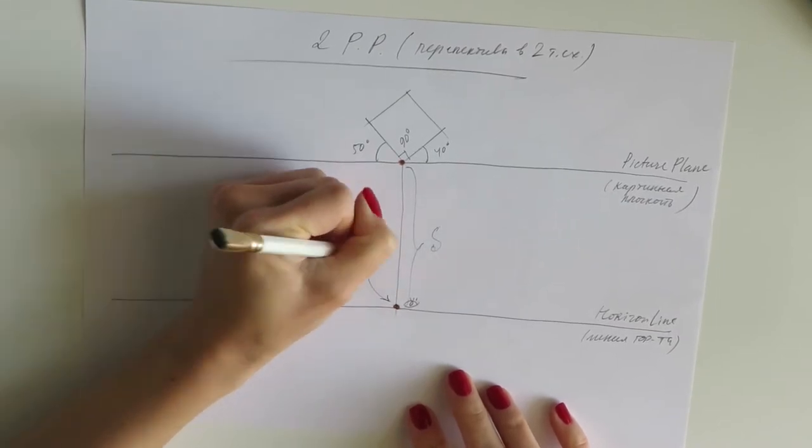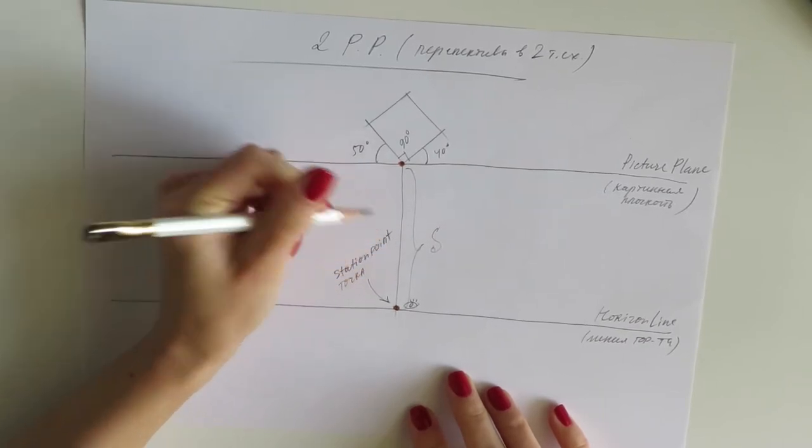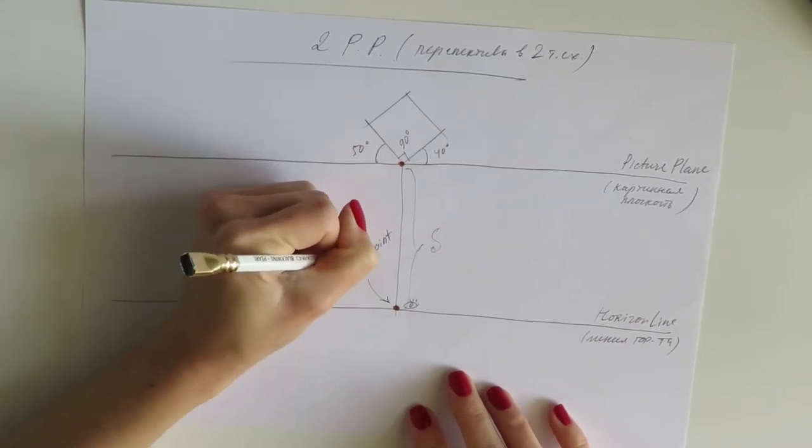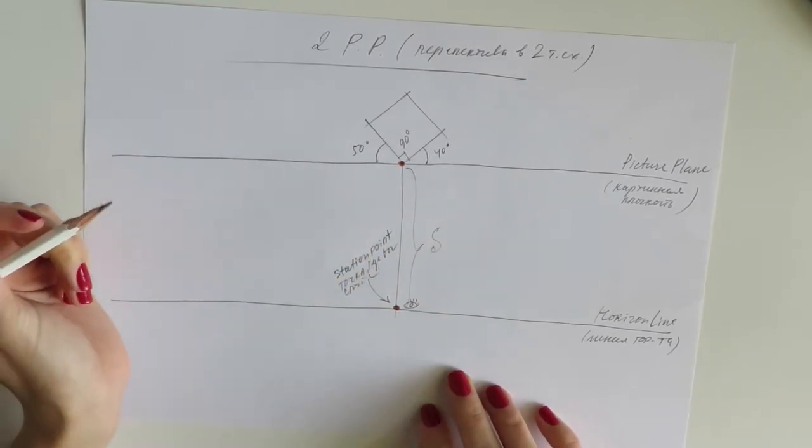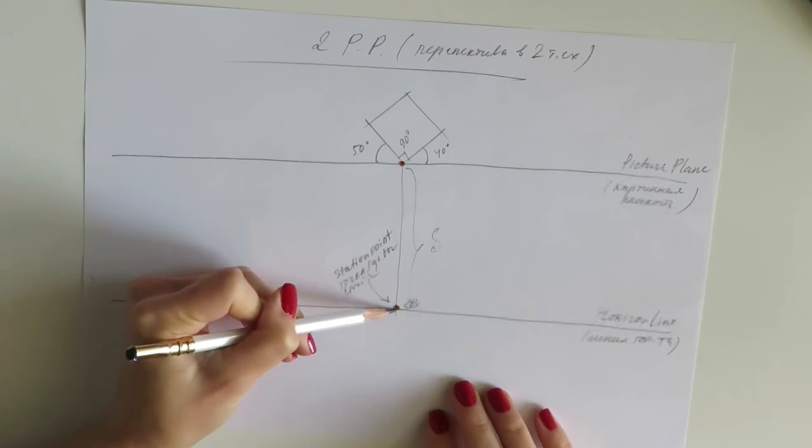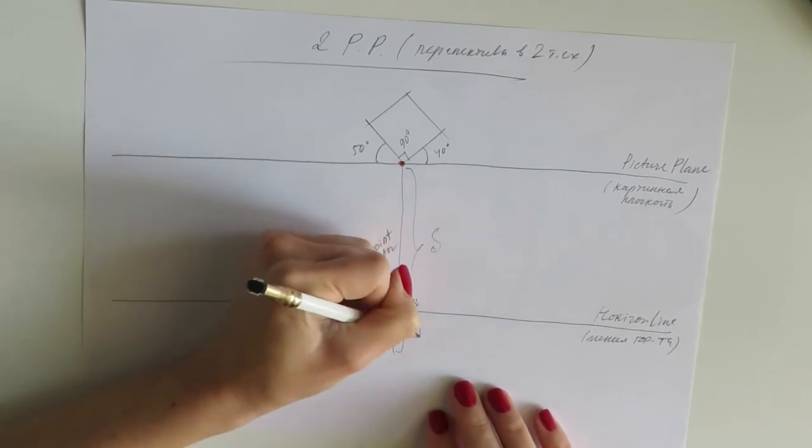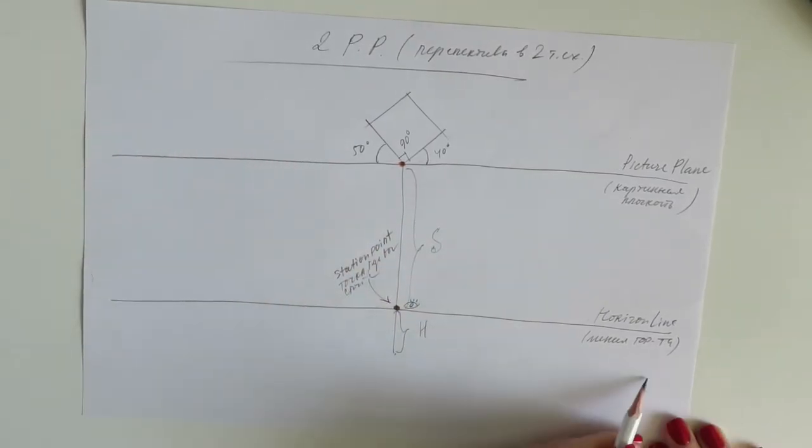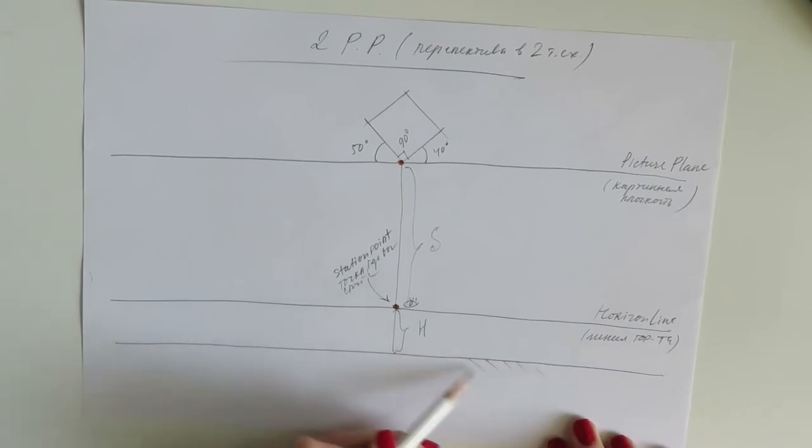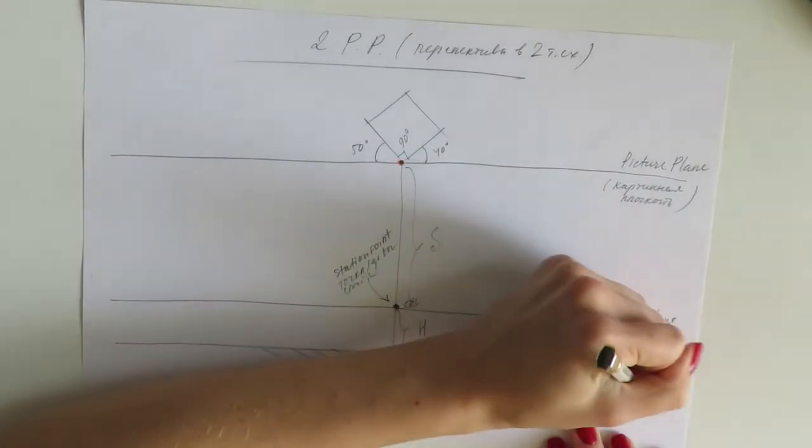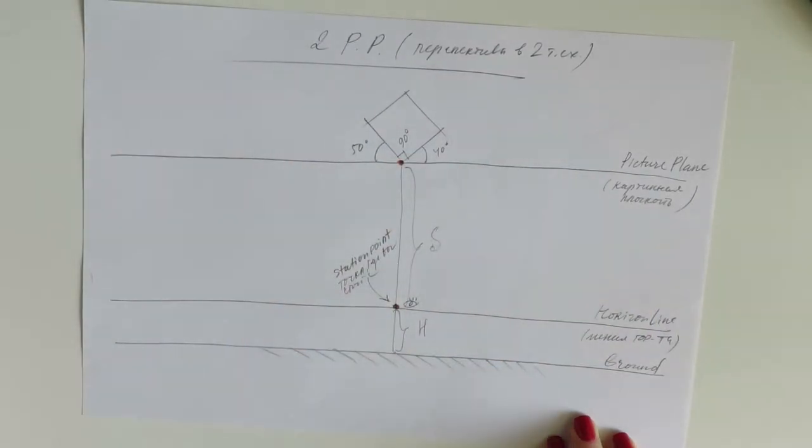Let's mark these two very important points. The first one is the station point, and above it is the point where the floor plan hits the picture plane. So now let's show the height of the building. Let's say we have our eye level, our horizon line, and I will measure our height, for example two meters. So I measure two meters down from this line to find the ground plane.